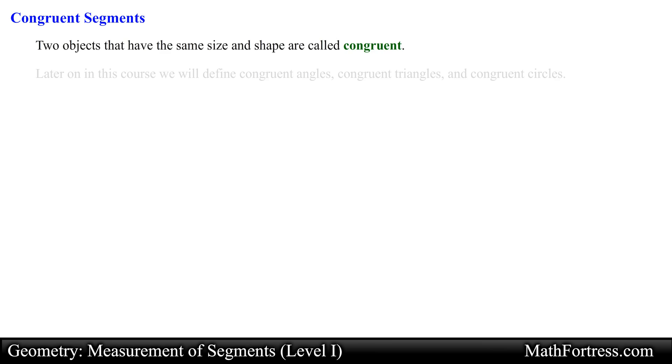Now let's talk about congruent segments. In geometry, two objects that have the same size and shape are called congruent. For many geometry figures, we can give a more precise definition of what it means to be congruent. Later on in this course we will define congruent angles, congruent triangles, and congruent circles. Let's first define congruent segments. Congruent segments are segments that have the same lengths; in other words, the segments have equal measurements.